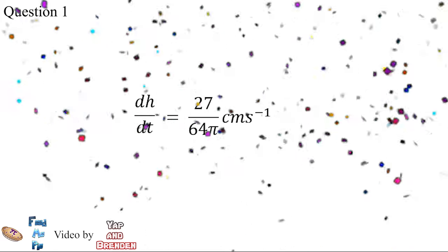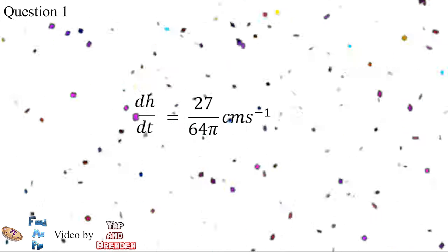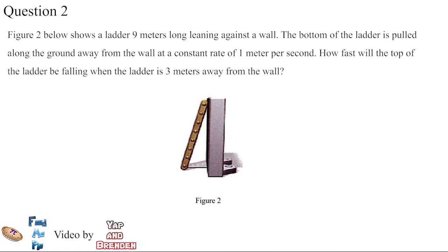Question 2: Figure 2 below shows a ladder 9 meters long leaning against a wall. The bottom of the ladder is pulled along the ground away from the wall at a constant rate of 1 meter per second. How fast will the top of the ladder be falling when the ladder is 3 meters away from the wall?